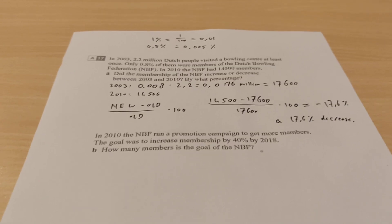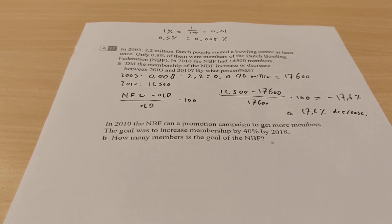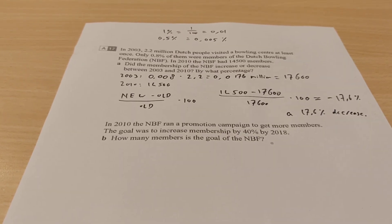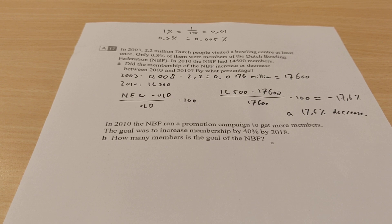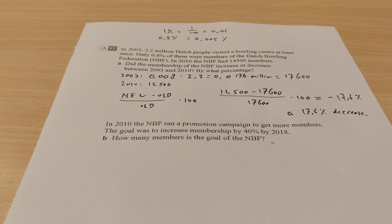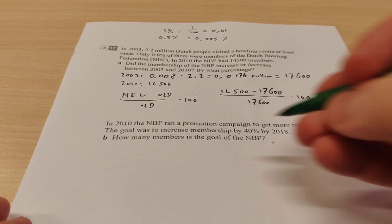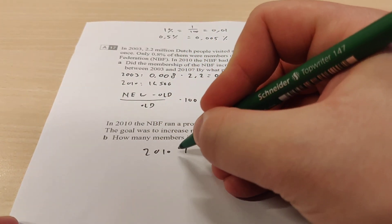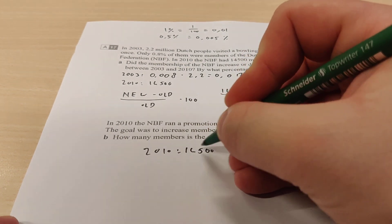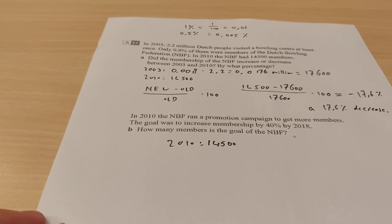Then we're going to move to exercise B. It says, in 2010, the NBF ran a promotion campaign to get more members. The goal was to increase the membership by 40% by 2018. How many members is their goal? We know the number of members in 2010. In 2010, there were 14,500 members. And now they want to have 40% more.